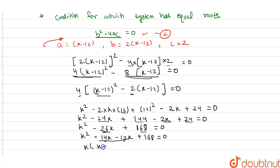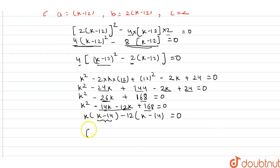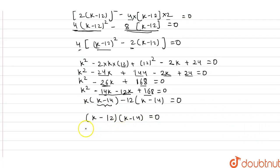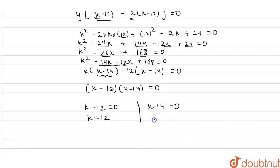Taking k common from the first two terms and minus 12 common from the last two terms, we get k(k minus 14) minus 12(k minus 14) equals zero. So (k minus 14)(k minus 12) equals zero. Therefore k minus 12 equals zero giving k equals 12, and k minus 14 equals zero giving k equals 14. The values of k are 12 and 14.